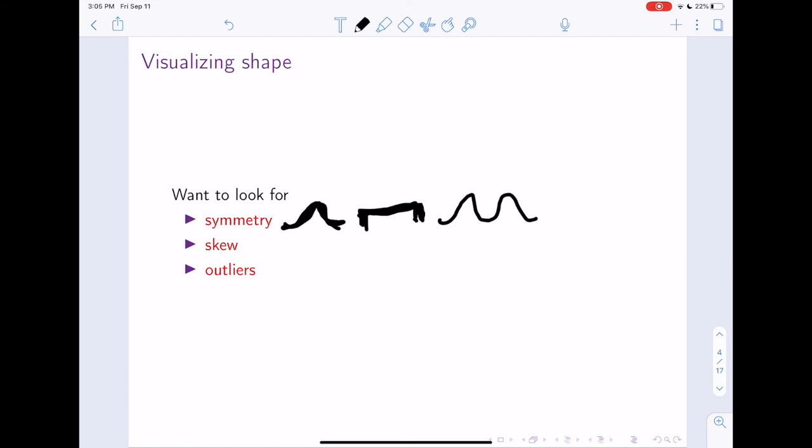The next thing we're interested in is what is called skew. Skew basically refers to whether there's a tail going in one direction or another. We could have data that go off to the right or data that go off to the left. Those are things we're going to describe using the word skew. The final piece is outliers, and we'll talk about outliers.